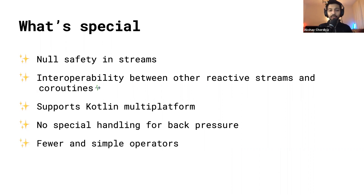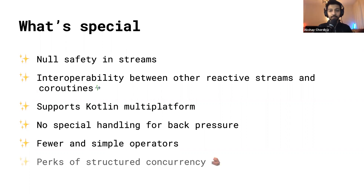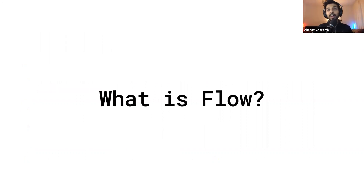There are very few operators, not because they aren't built, but because of Kotlin extension function magic and the suspending nature of coroutines. Because of that, a single operator can handle both synchronous and asynchronous APIs, drastically cutting down the number of operators. And you get the perks of structured concurrency. So now you know how special Kotlin Flow is — let's look at what it is.